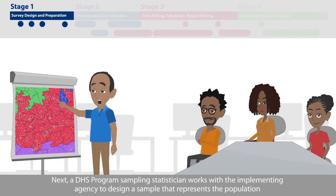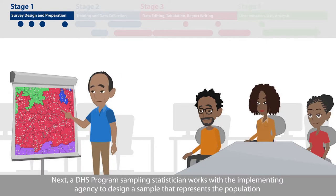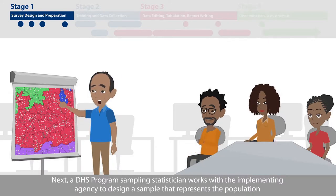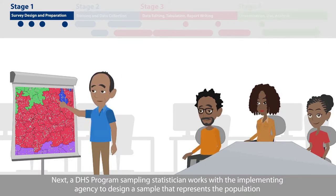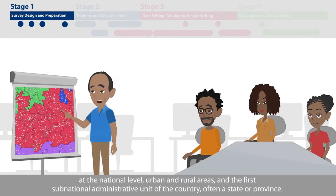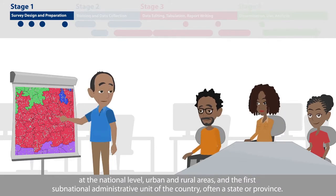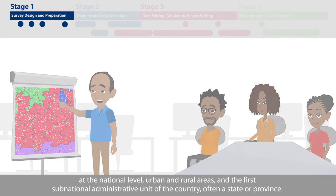A DHS program sampling statistician works with the implementing agency to design a sample that represents the population at the national level, urban and rural areas, and the first subnational administrative unit of the country, often a state or province.